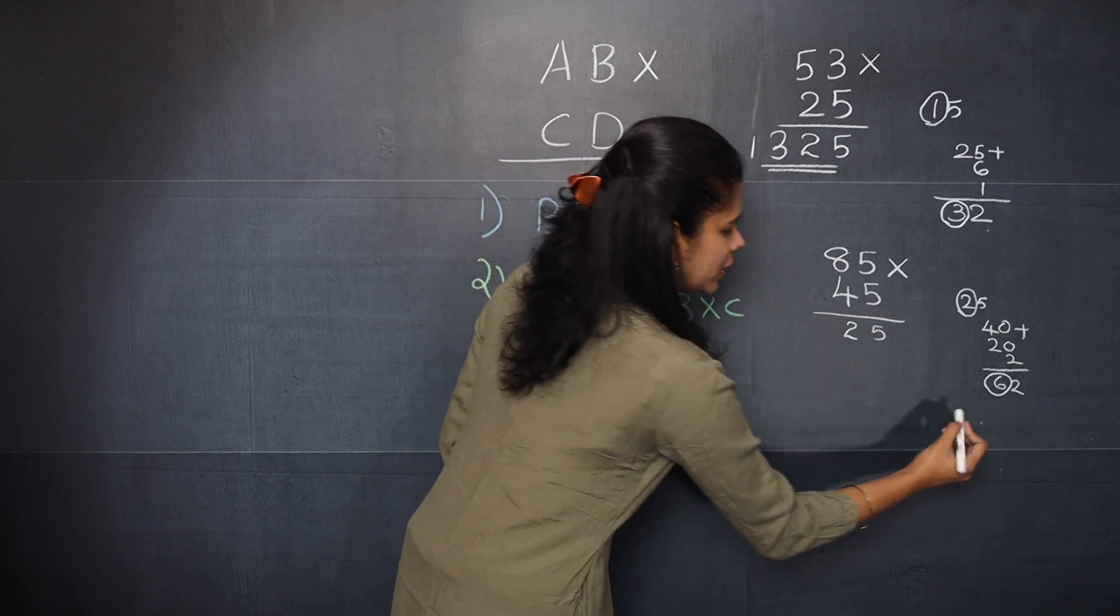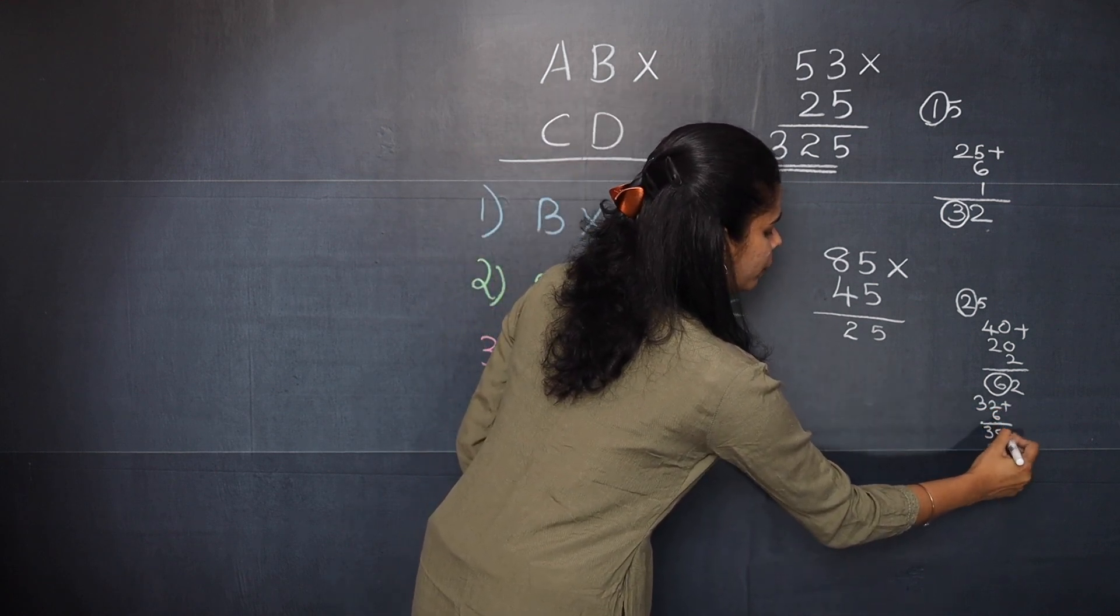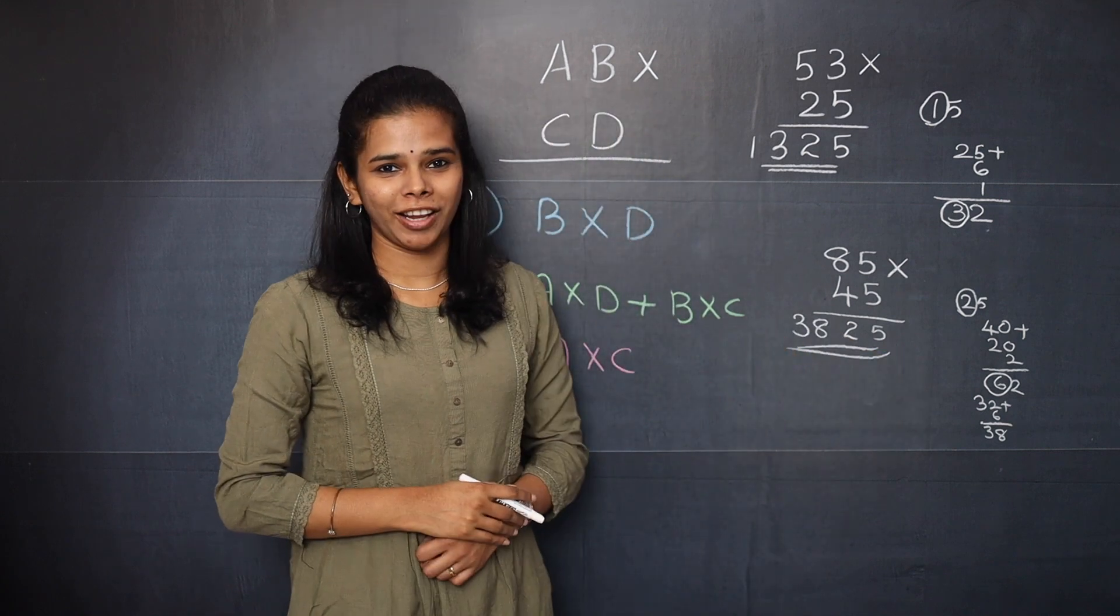Now 8 into 4 is 32. And 32 plus 6 gives you 38. So the answer is 3825. I hope this trick was useful for everyone. Stay tuned for more videos. Till then bye and thanks for watching.